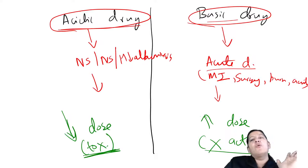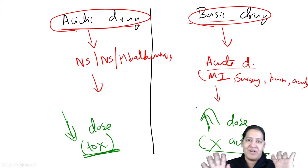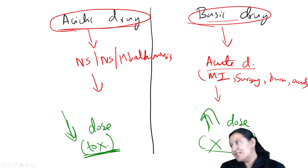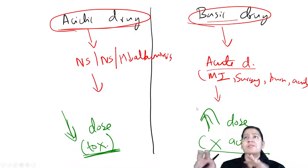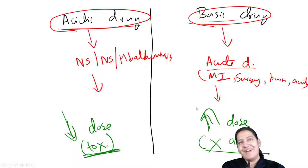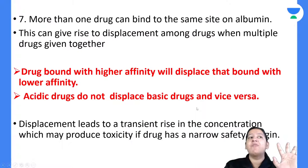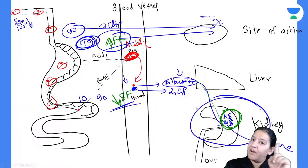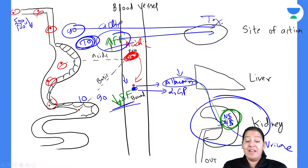Here, toxicity is the problem with acidic drugs in hypoalbuminemia, whereas no action is the problem with basic drugs in acute phase reactions. You have to reduce the dose for acidic drugs and increase the dose for basic drugs from the conventional dose. Plasma protein binding is really very important — you have to understand the concept behind it.